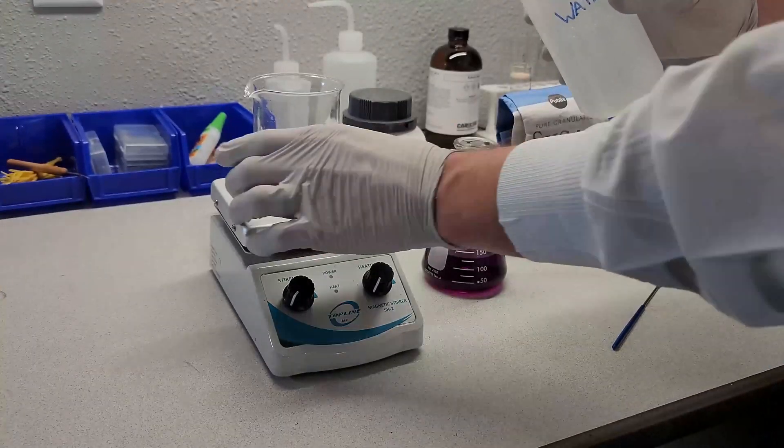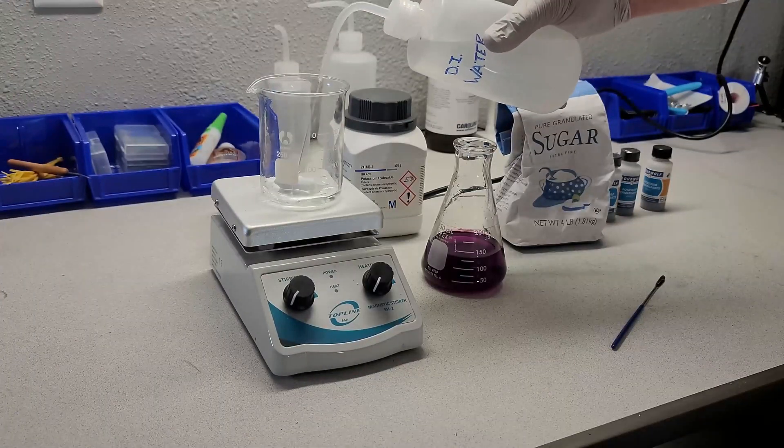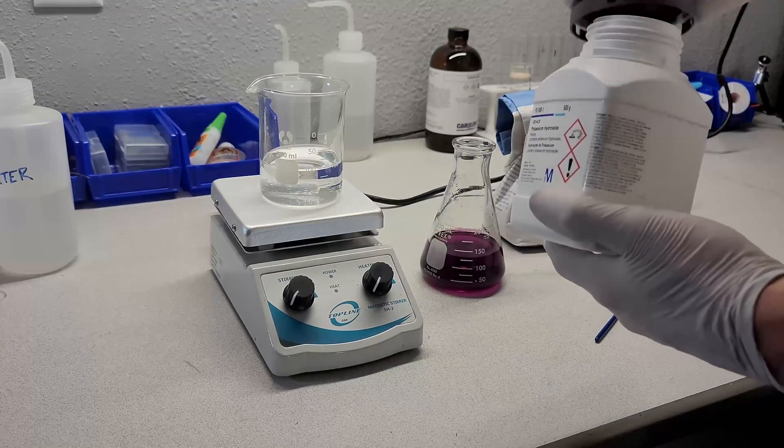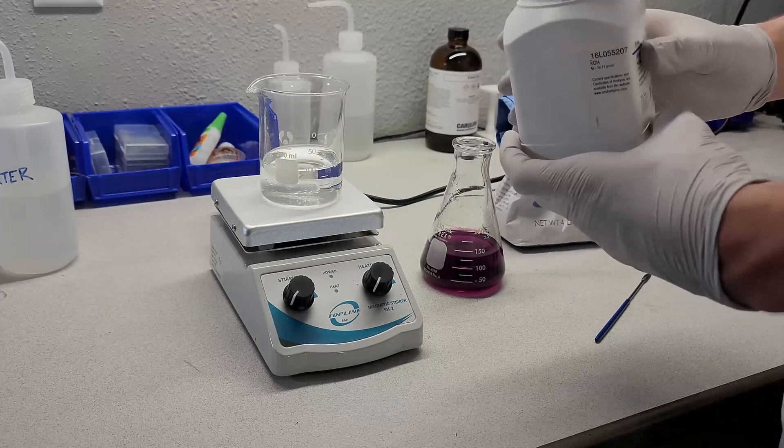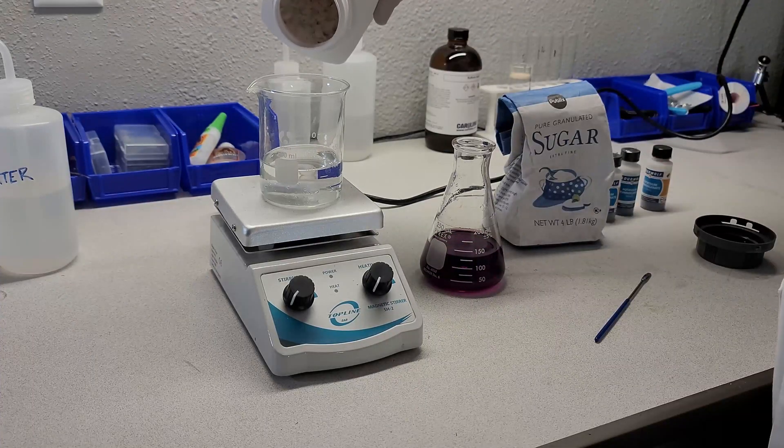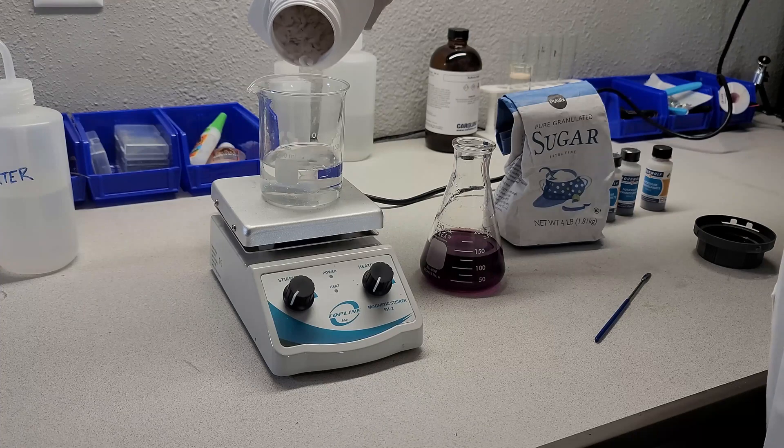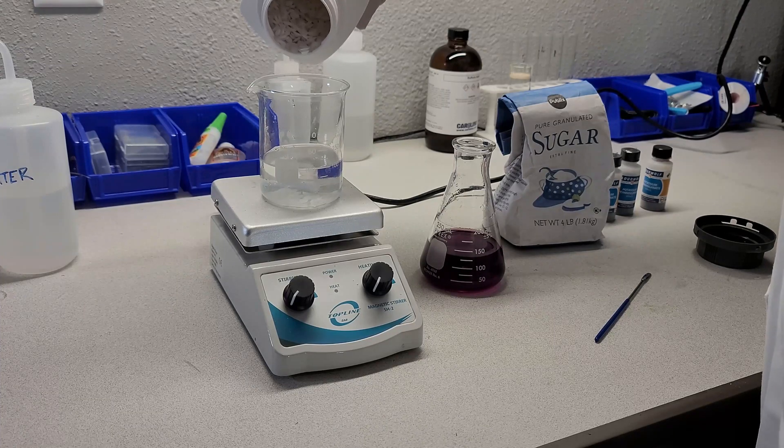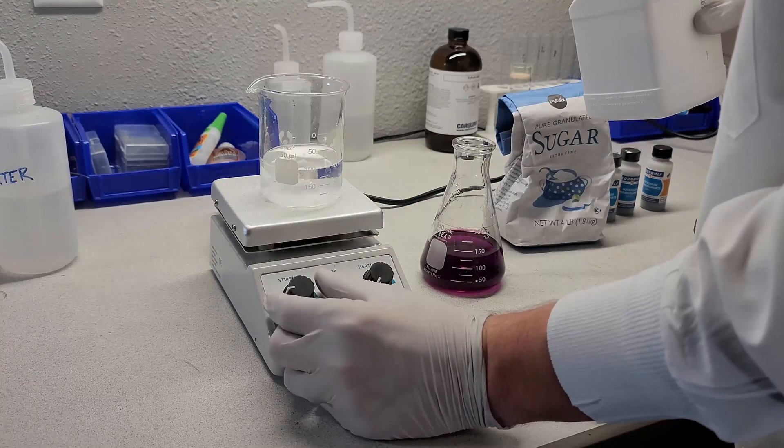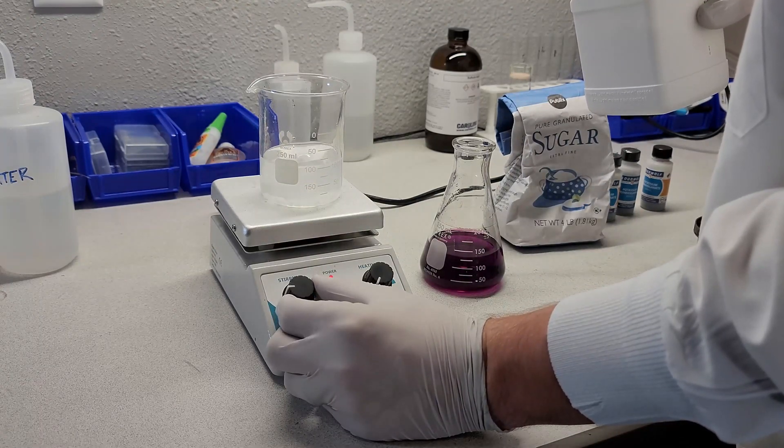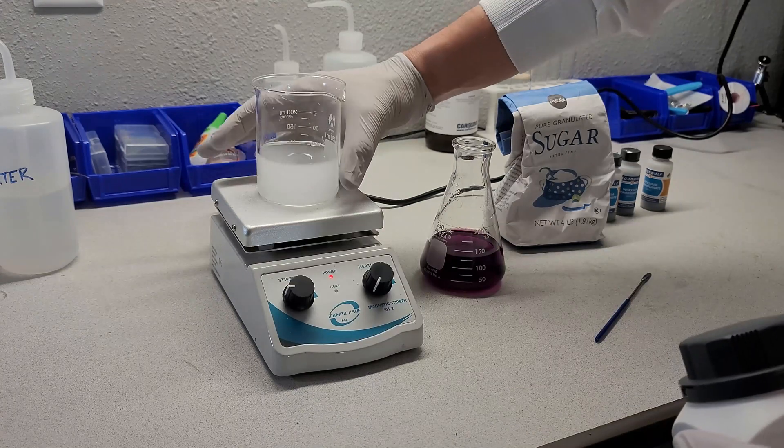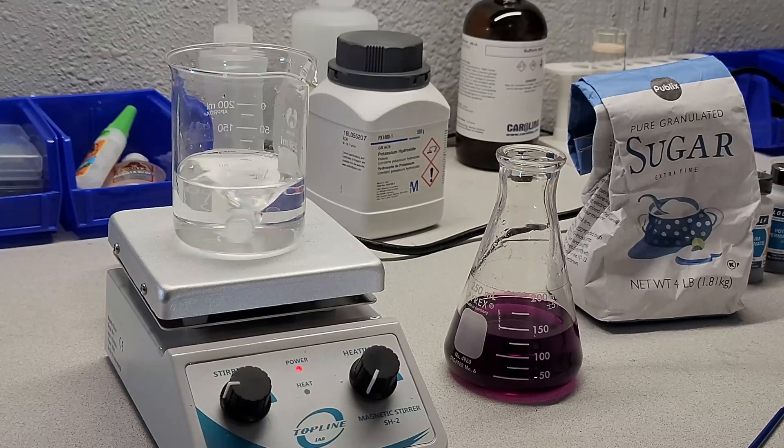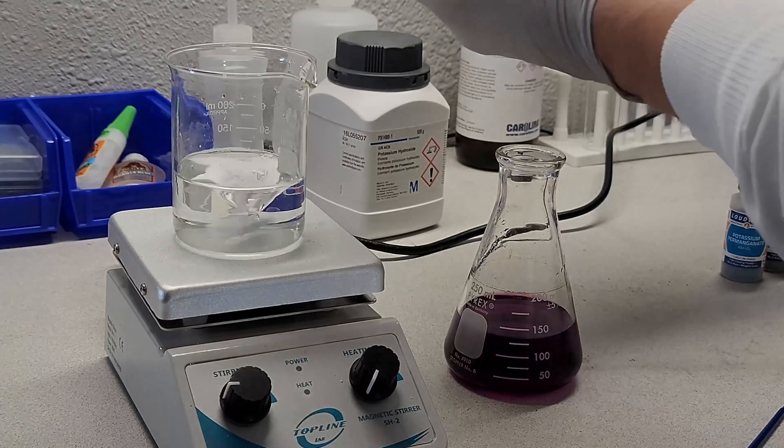In this guy, I'll add another hundred milliliters of water, and we'll go ahead and add our potassium hydroxide. Now potassium hydroxide is a strong base, so when this dissolves, the reaction will be exothermic, meaning the water will heat up. So we'll go ahead and turn on that stir bar, and even without heat, you can tell it's starting to get a little warm. Okay, since that looks dissolved, I'm going to go ahead and add our sugar.